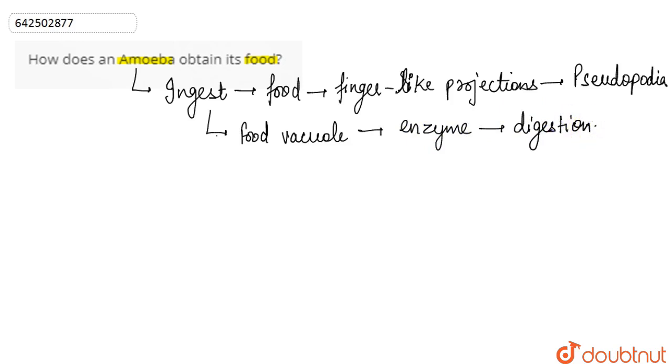Once the food gets digested, the food vacuole disappears. So this process of obtaining food by the amoeba is basically known as endocytosis. This complete process is known as endocytosis. So if we discuss what